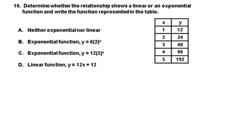Last one, 10. Determine whether the relationship shows a linear or exponential function and write the function represented in the table. We're going up by 1 on the left side, on the right side we say plus 12. But if we take 48 minus 24, we get plus 24. Then we have plus 48. We are not a linear function at this point. So we can cross out D. Let's try exponential. What do you multiply 12 by to get 24? 2. What do you multiply 24 by to get 48? 2. So 2 is our base. That would be consistent with either B or C.